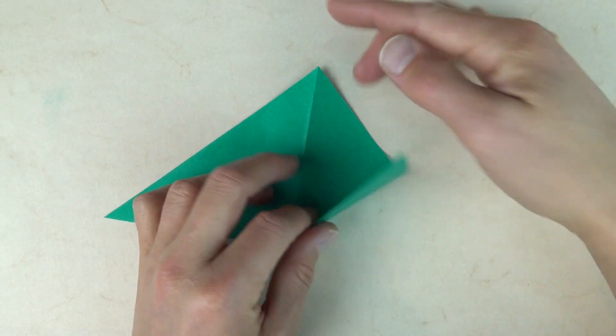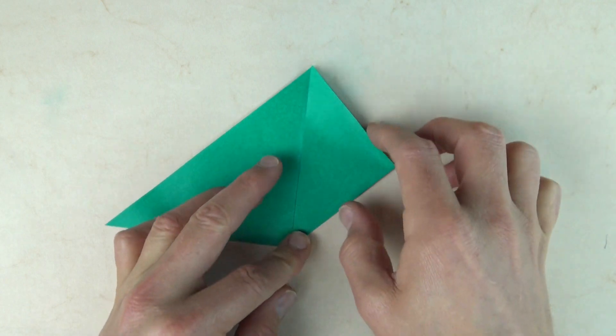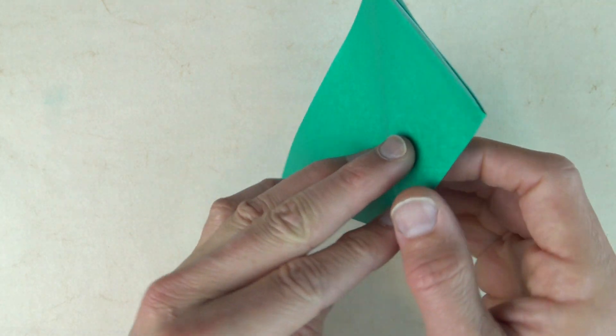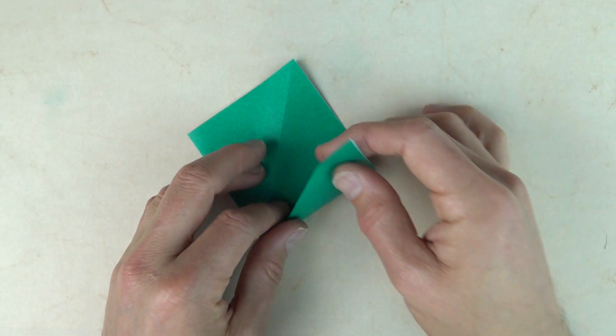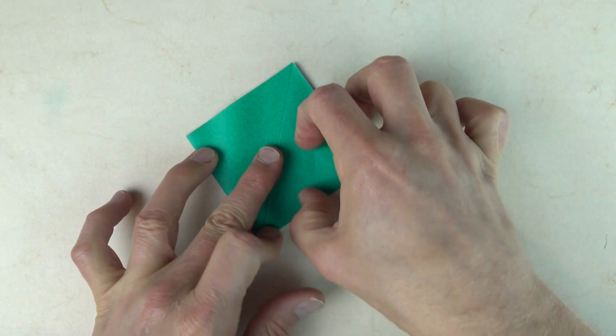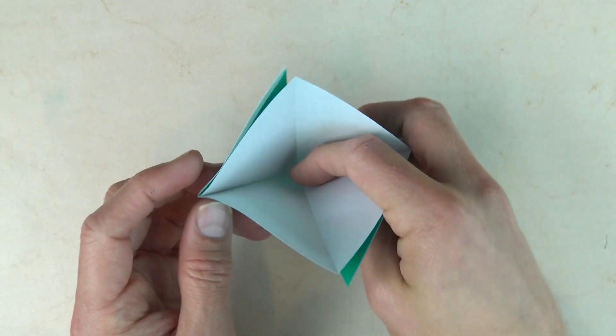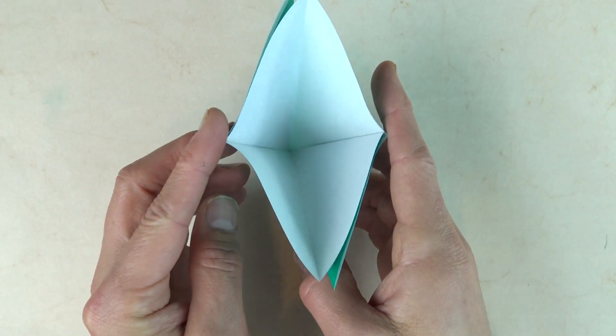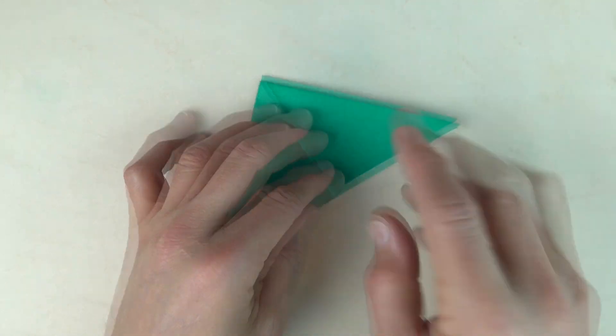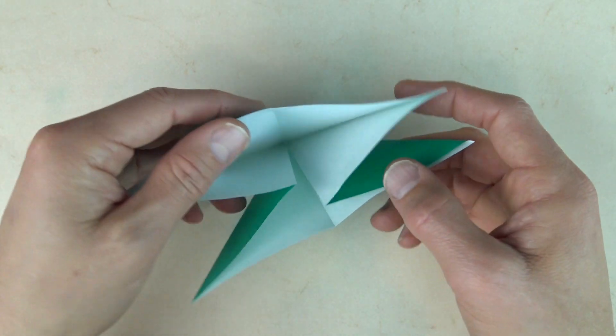Now fold this corner to the top. Turn over. And repeat. Open the big pocket. Put your finger inside. And push the left and right sides together. And flatten. And here we have the water bomb base.